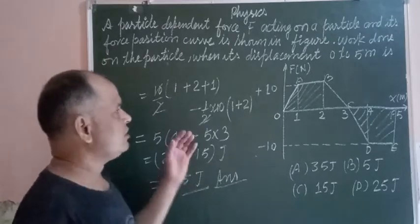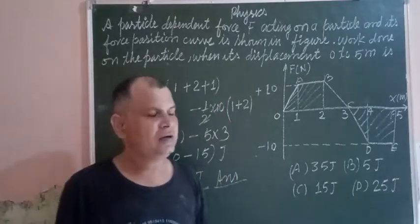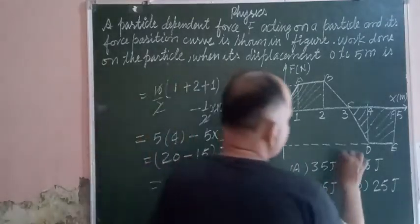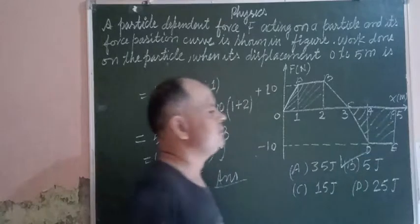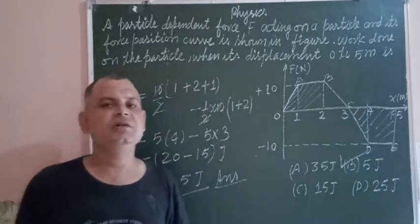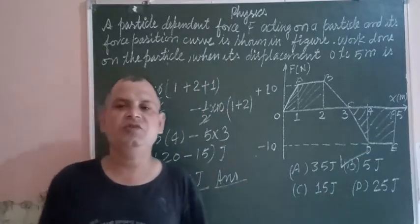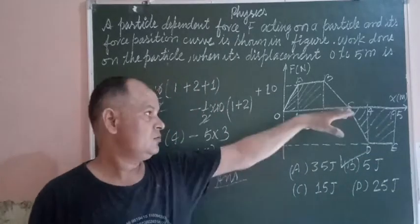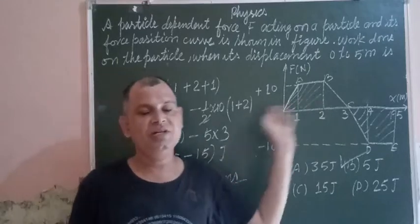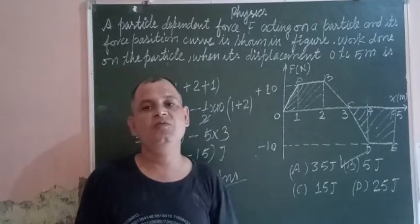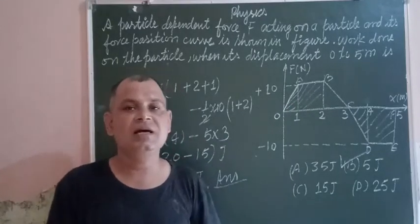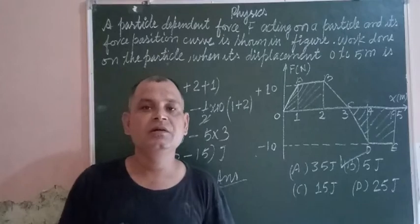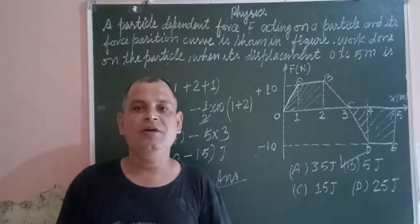Work done is found in Joules: 20 minus 15 gives 5 Joules. So the work done by the particle is 5 Joules. Students, this is the solution to the question in which the graph of displacement and force is given and the question asks about the work done.